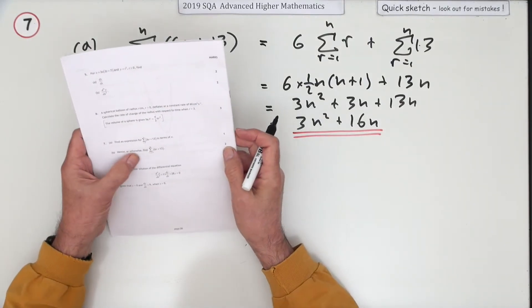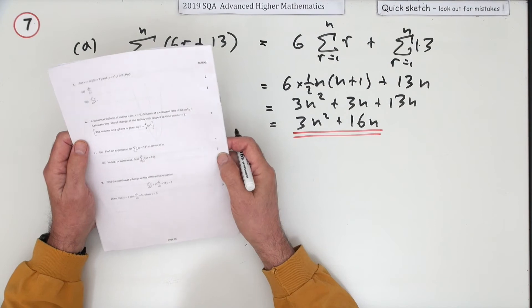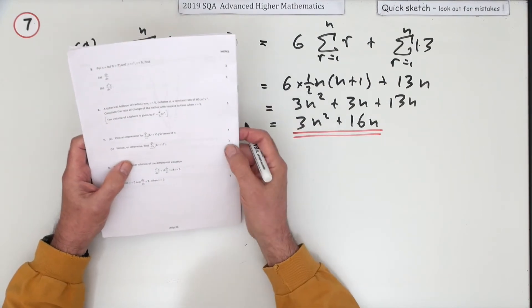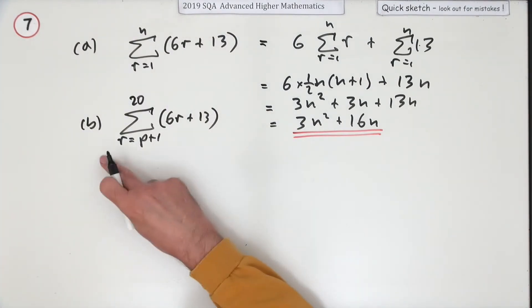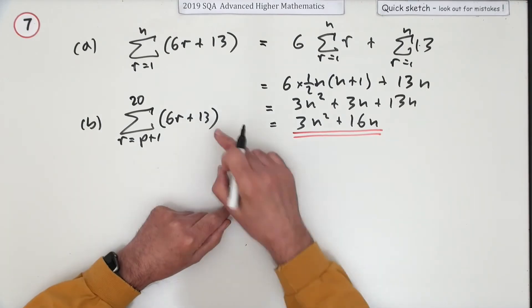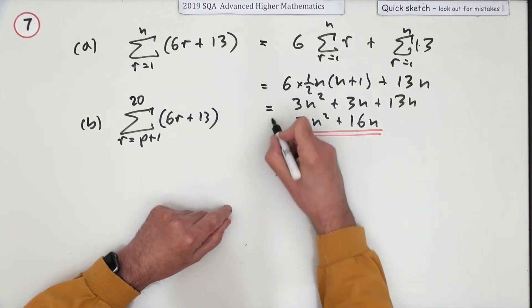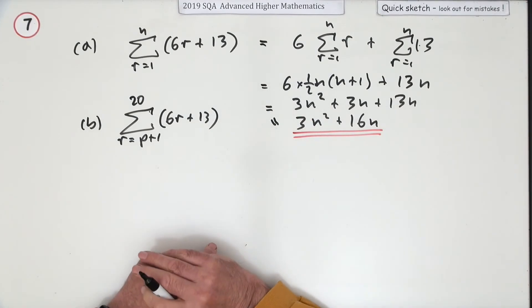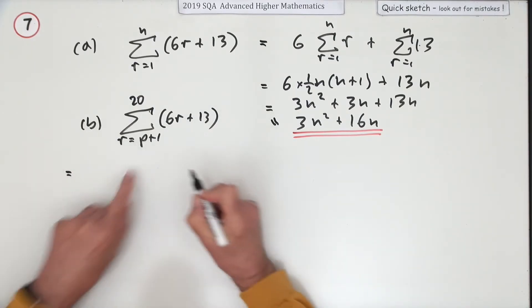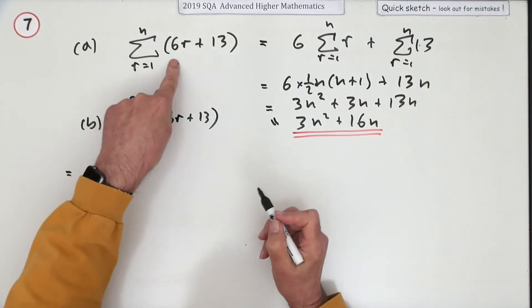Then in part b, hence or otherwise—well it's going to be hence isn't it since you've gone to the trouble—just for two marks here, what does this come to? Well it doesn't start at one. This formula here only applies if you count all the way from one, all the terms from the first term to the nth term.